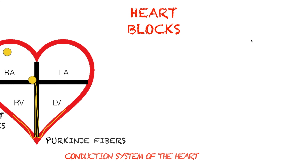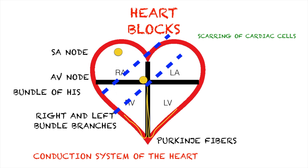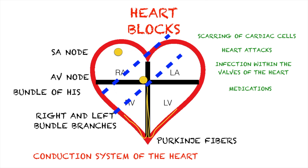This is how you're going to interpret your heart blocks. First and foremost, what causes heart blocks? In heart blocks, the problem lies within the conduction system of the heart. The block may be found between the SA node and the AV node, or the problem could be found between the AV node and the bundle of His all the way to the Purkinje fibers. Common causes of heart blocks are scarring of the cardiac cells due to aging, heart attacks, valve infections caused by endocarditis, and some medications such as digoxin. Whatever the cause is, do know that they affect the conduction system of the heart and they cause your EKG to change.